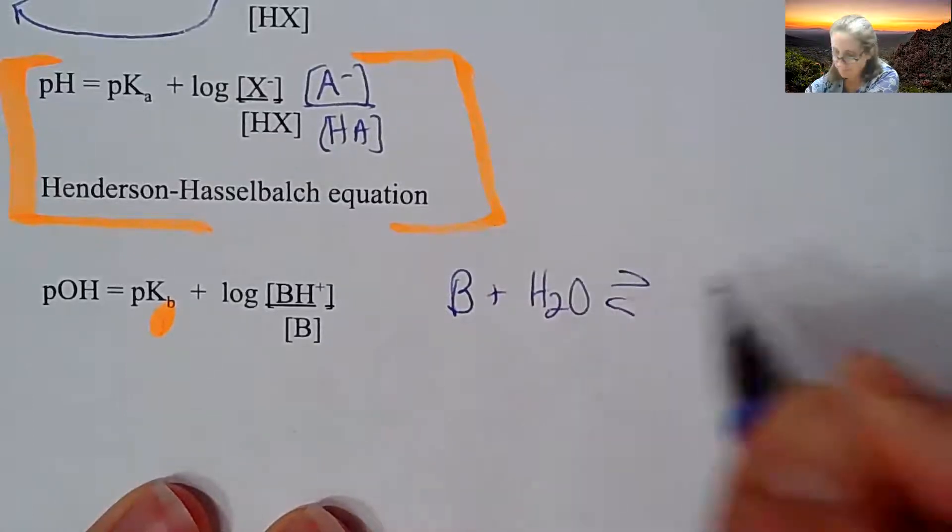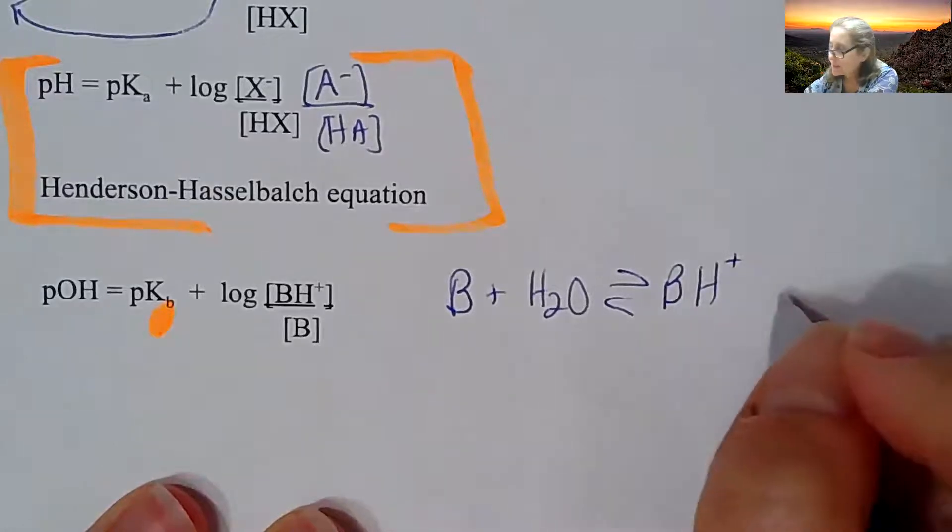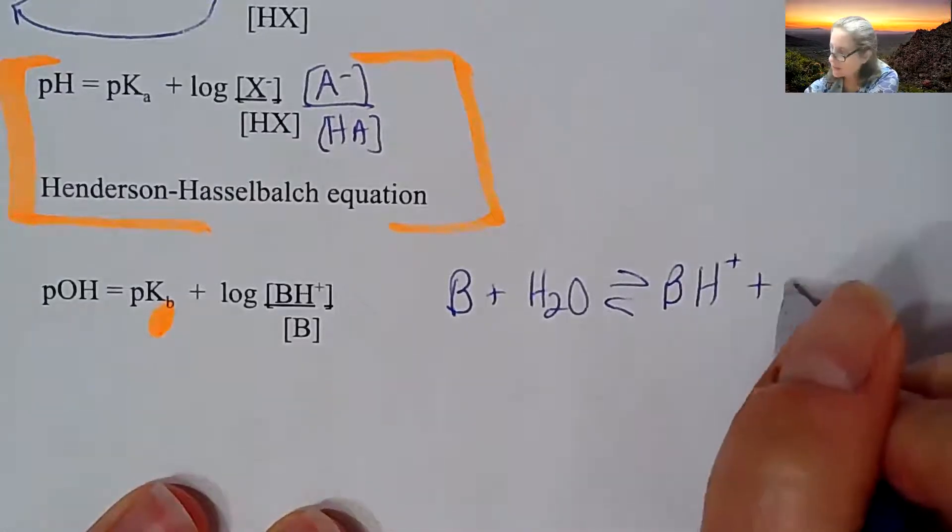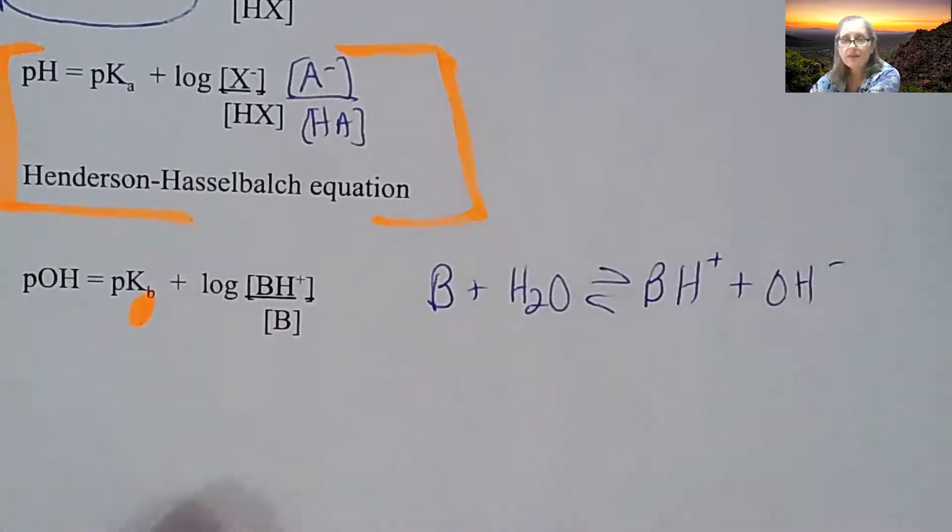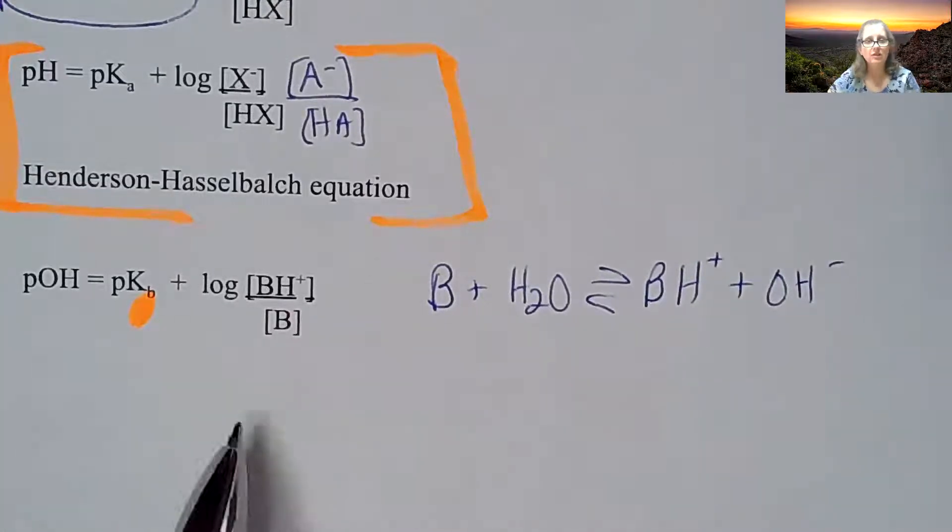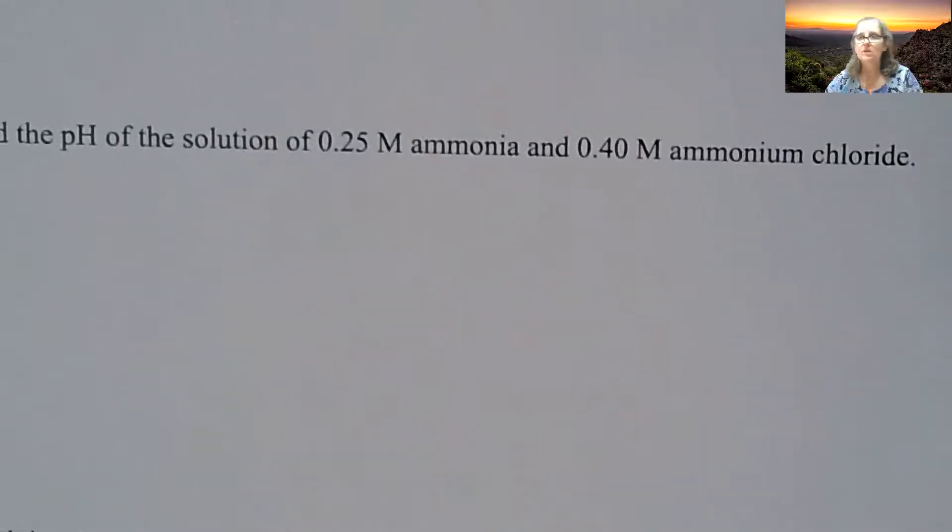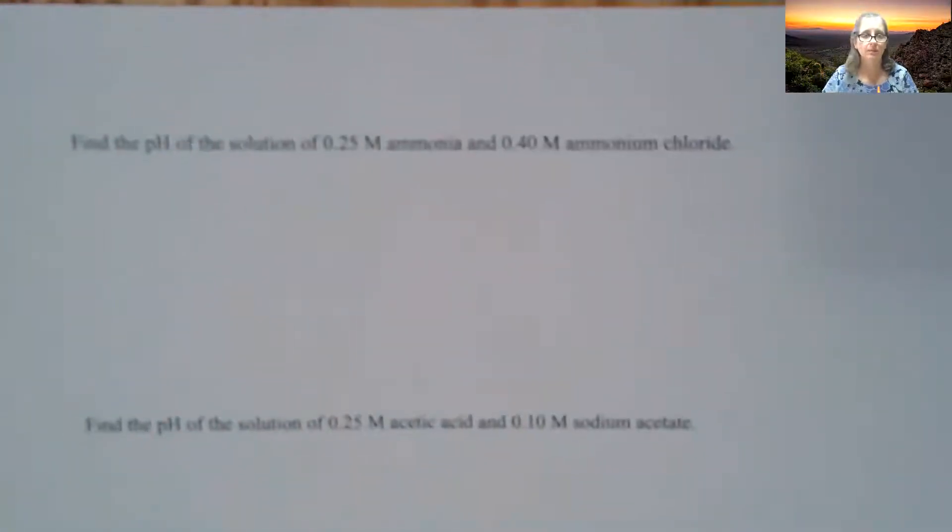So I'm going to write it over here. So base plus water, base and then an H+, because it's been accepting the H+, and then you're left with OH-. So I'm going to show you a calculation here using that so you can feel comfortable with it, but just know that the Henderson-Hasselbalch equation is on your formula sheet. So go to the next page, and let's try to do some of the calculations associated with buffers.